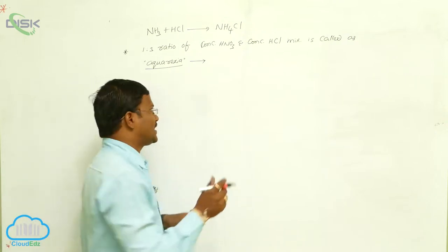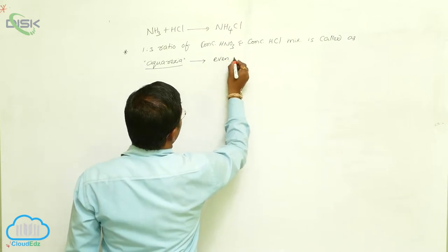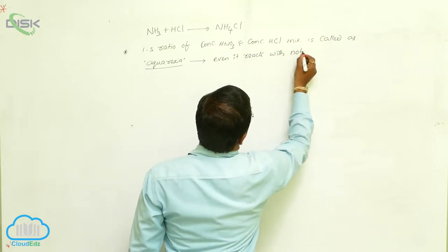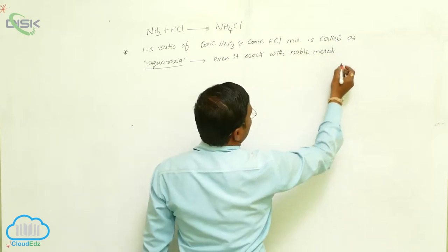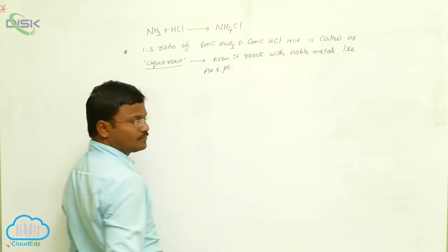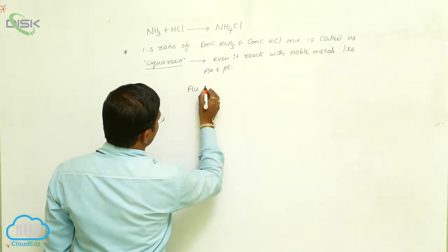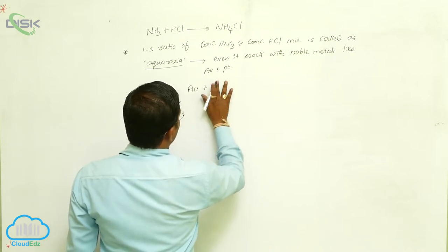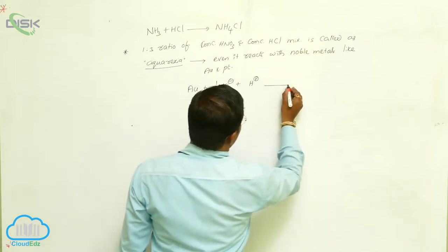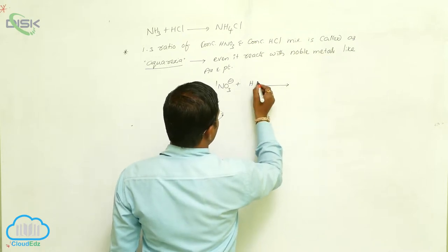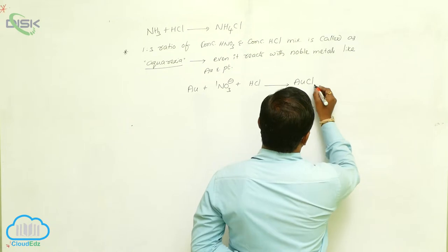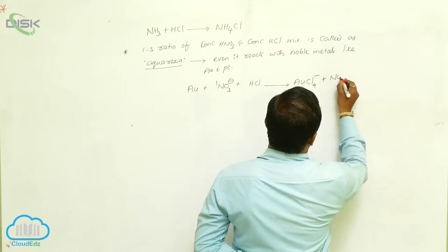Aqua regia reacts even with noble metals like gold and platinum. The chemical reaction for gold: Au reacts with HNO3, which dissociates to produce nitrates and H⁺; then reacts with HCl to produce AuCl4⁻ along with formation of NO and H2.